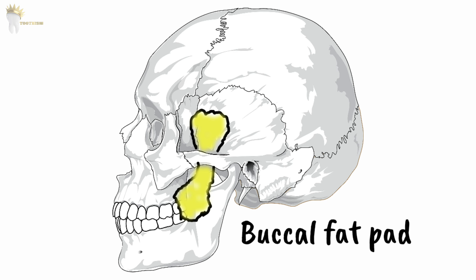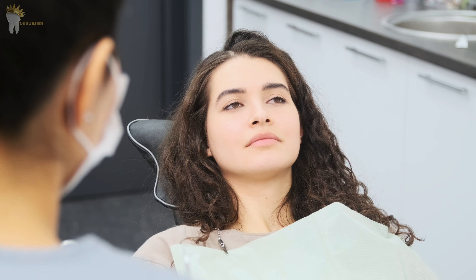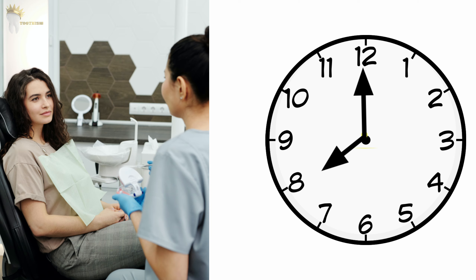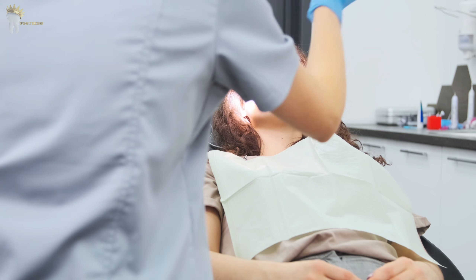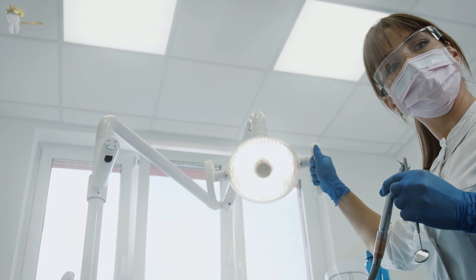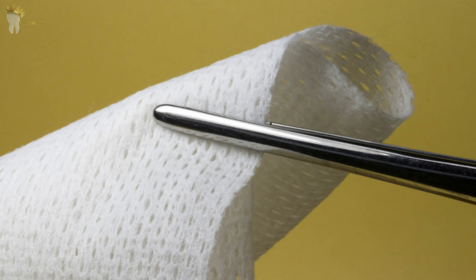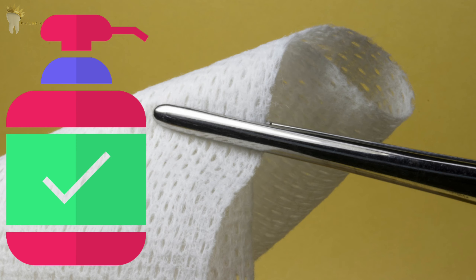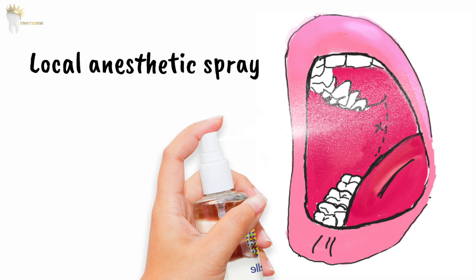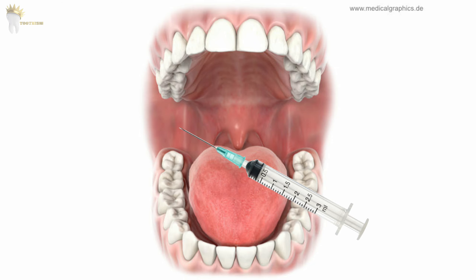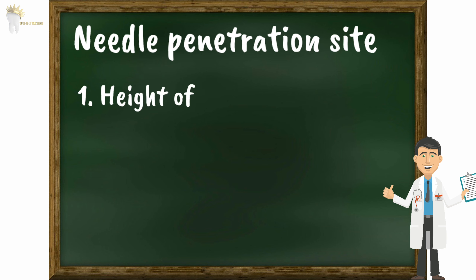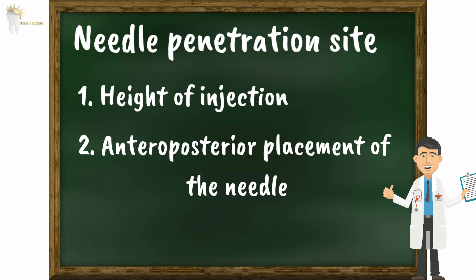The patient should be seated in a dental chair. For a right-side inferior alveolar nerve block, the dentist should be at the 8 o'clock position facing the patient; for a left-side block, at the 10 o'clock position facing the same direction as the patient. The mandible should be parallel to the floor when the patient opens their mouth. The injection site is dried with sterile gauze, topical antiseptic is applied, then topical anesthetic is applied for 1–2 minutes to make needle insertion painless. Three points determine the needle penetration site: height of injection, antero-posterior placement, and depth of insertion.